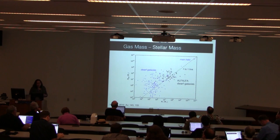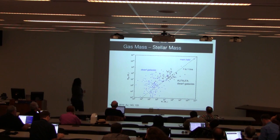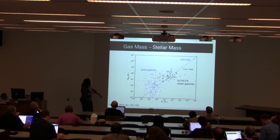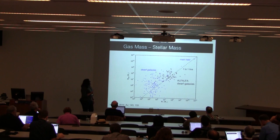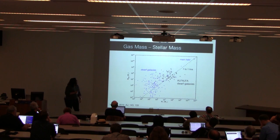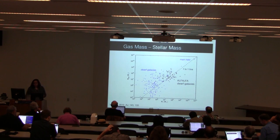Looking at gas mass versus stellar mass for these dwarfs, we see that they agree well with the ALFALFA dwarf galaxy sample. There's a one-to-one line shown, and the gray squares are the ALFALFA dwarfs. Our dwarf galaxies live where they should in terms of their gas-to-stellar mass ratio, which is encouraging.